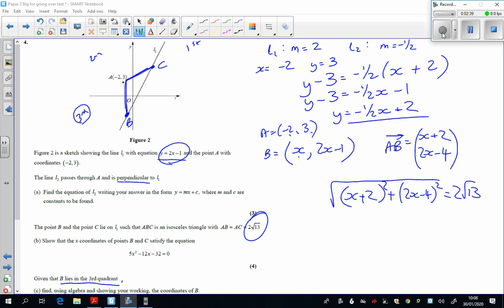If you don't want to do vectors, well, you're doing exactly the same here. You're doing how far apart are these two points? So it's X minus minus 2, so X plus 2 all squared, plus 2X minus 1 minus 3 all squared. We've got exactly the same thing here.